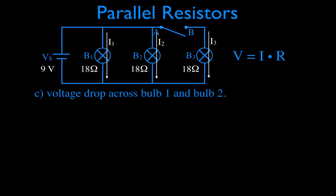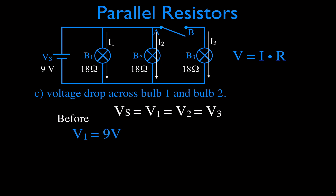Next, we want to know the voltage drop across each bulb when we close the switch. The voltage rule tells us that in a parallel circuit, the voltage across each branch equals the voltage of the source. Before closing the switch, the voltage across bulb one was 9 volts: 0.5 amperes times 18 ohms equals 9 volts. Same for bulb two. Bulb three had no current, so its voltage was 0 before the switch was closed.